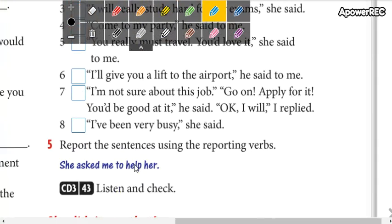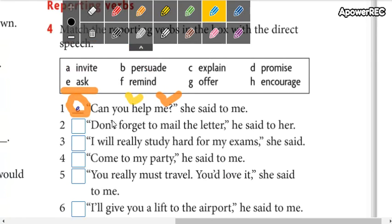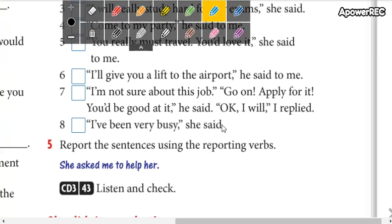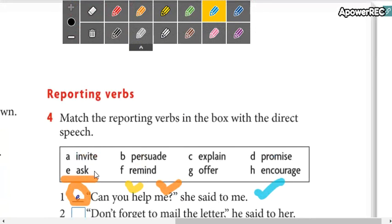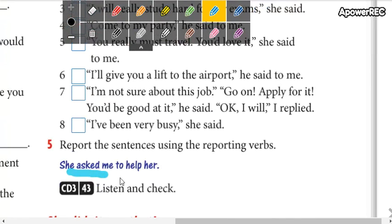you are going to report the sentences using the reporting verbs. For example, number one: can you help me? She said to me, so she asked me, because I am using the reporting verb, she asked me to help her.